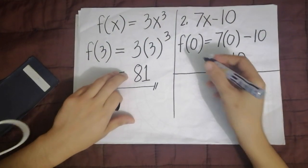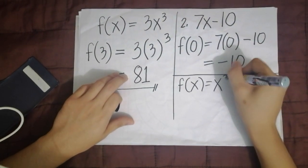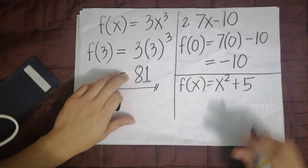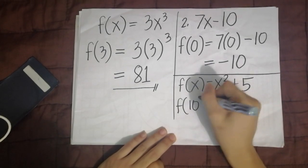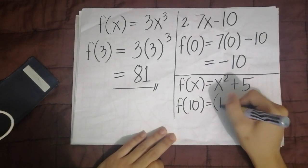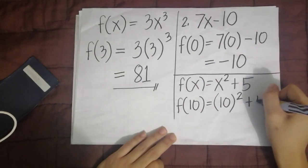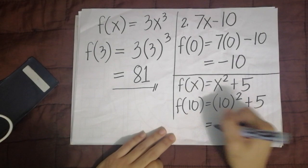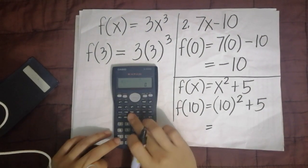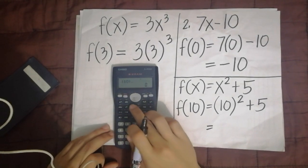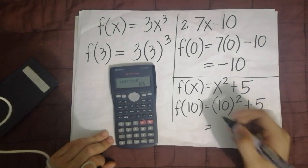So the equation is x squared plus 5. We substitute f of 10: parenthesis, 10, close parenthesis, raised to 2, plus 5. On the calculator: open parenthesis, 10, close parenthesis, raise to 2, plus 5, equals 105.